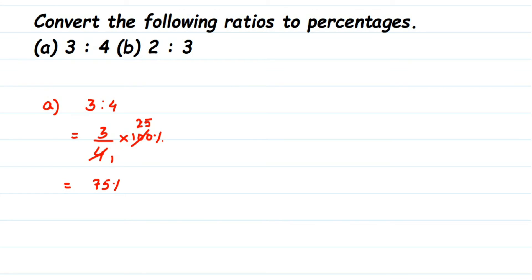Now in the second one, we have 2 is to 3. Same thing. Whenever we have a ratio given, write them in a fractional form, so this will become 2 by 3. And since we are finding out the percentage here, multiply by 100 and then put the percentage symbol.